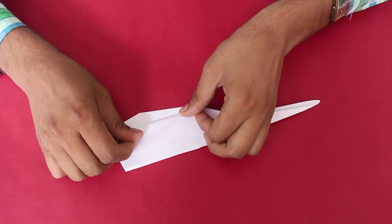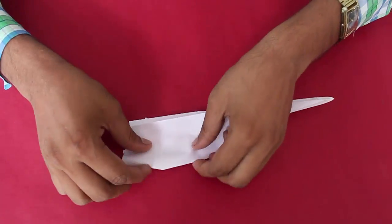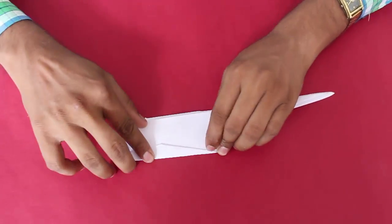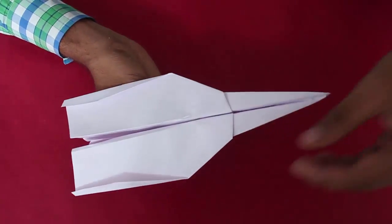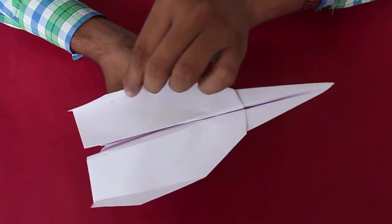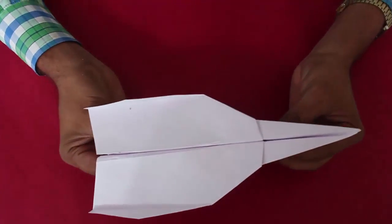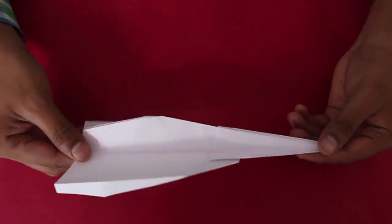Finally lift the long edges of both wings to make two small vertical walls. These will be the ailerons and they will help the aeroplane stabilize in flight.